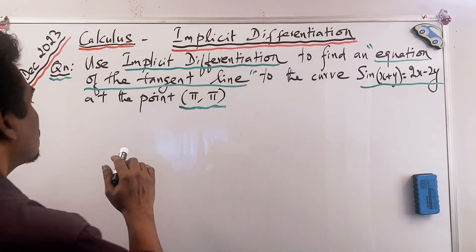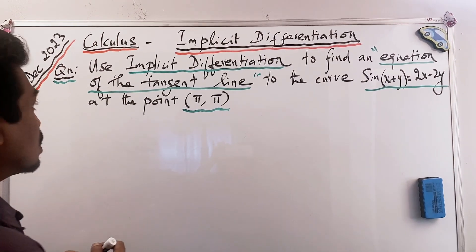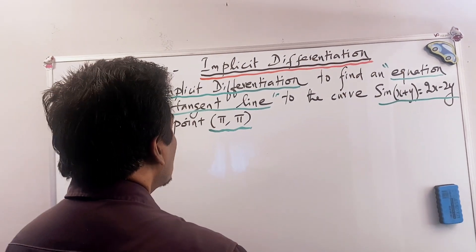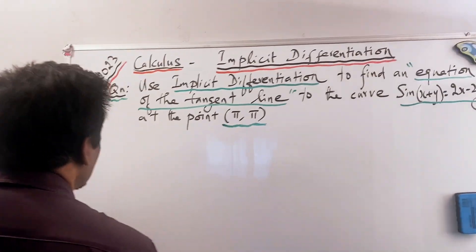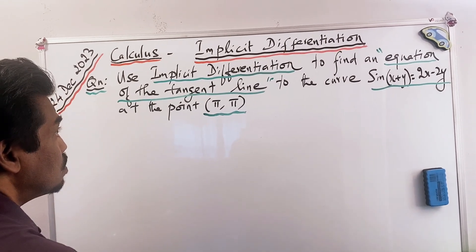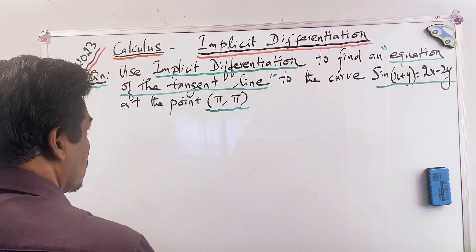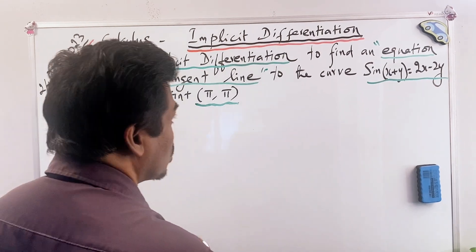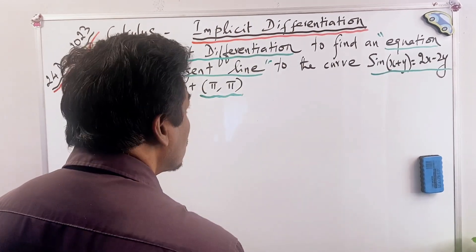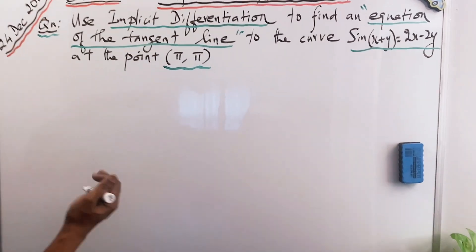This question is taken from the calculus chapter, more specifically it comes under the unit implicit differentiation. The question is: use implicit differentiation to find an equation of the tangent line to the curve sin(x + y) = 2x − 2y at the point (π, π).